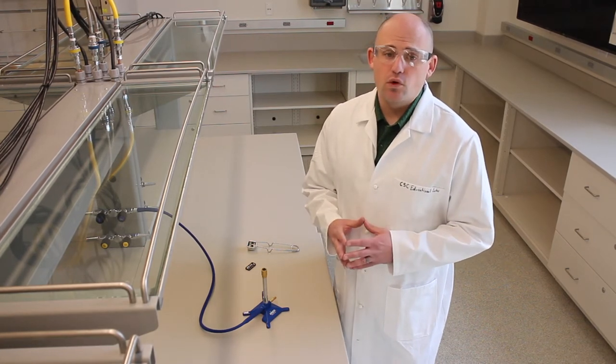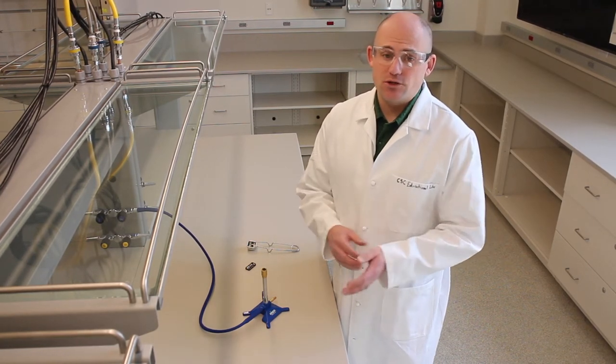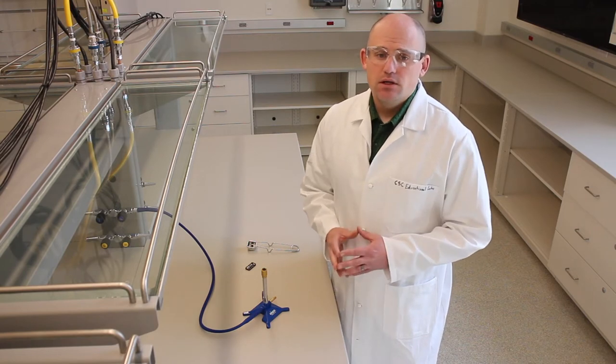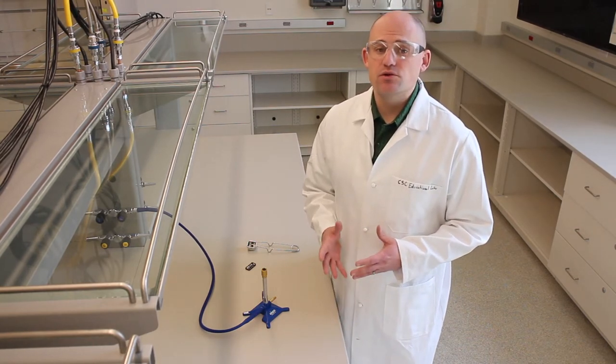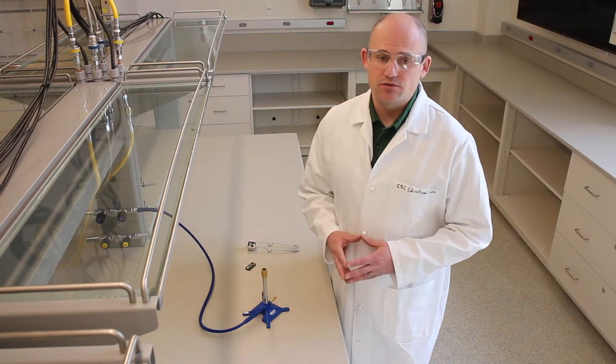Lab coats and clothing that are worn while working with a Bunsen burner should be natural fibers such as cotton. This will provide a little bit more protection than synthetic fibers in the event that your clothes or lab coat catch on fire.